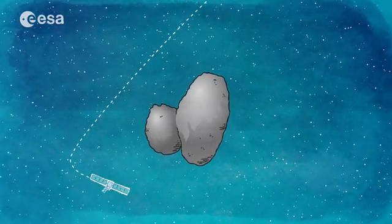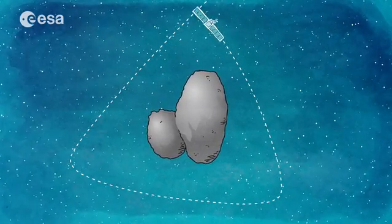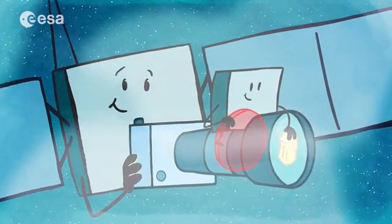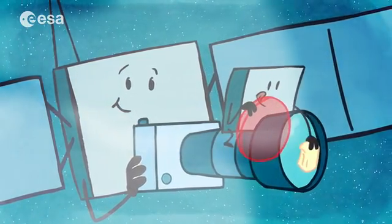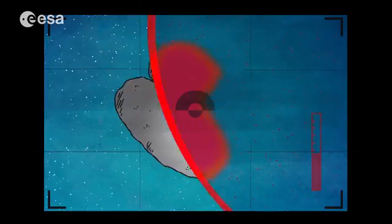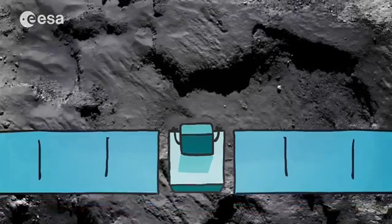Rosetta had to steer several times to get closer and closer to the comet. The closer Rosetta and Philae got to this strange world, the more wonders they discovered on its surface.